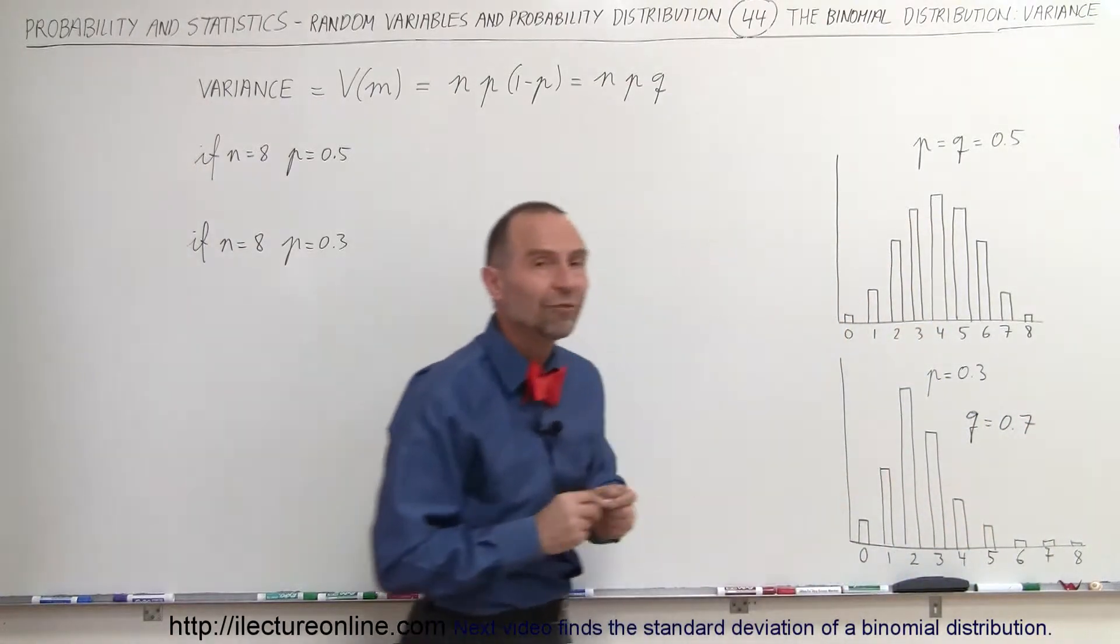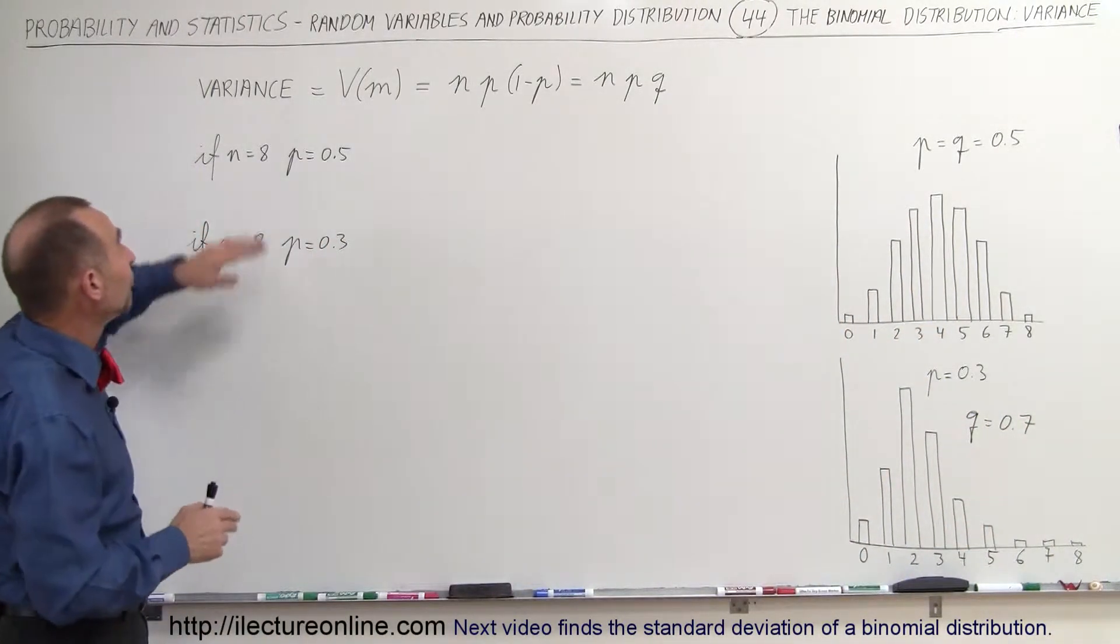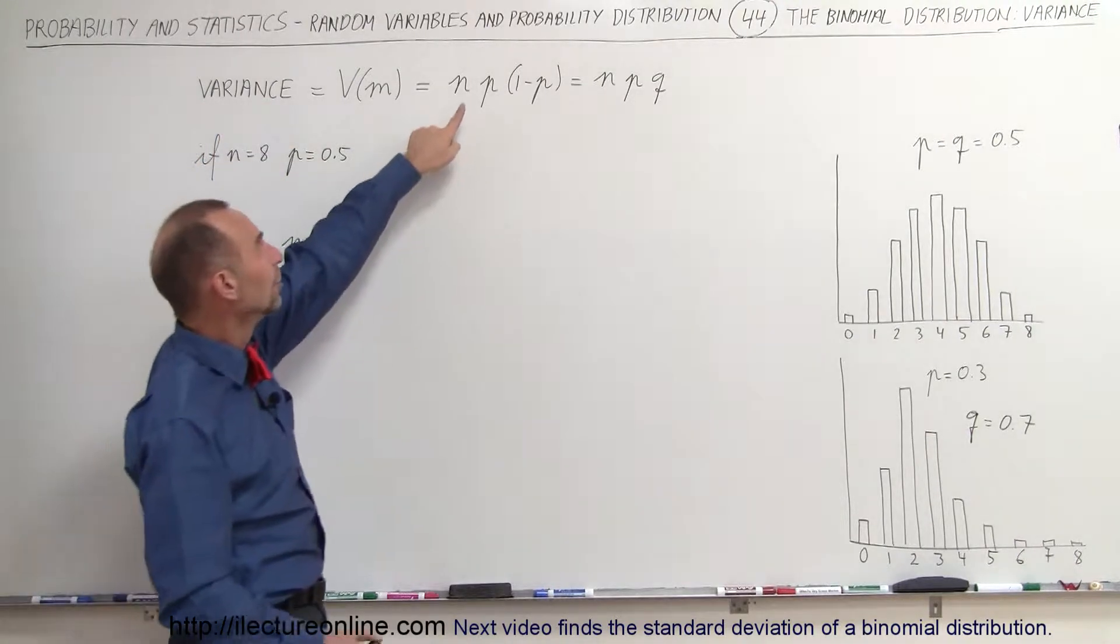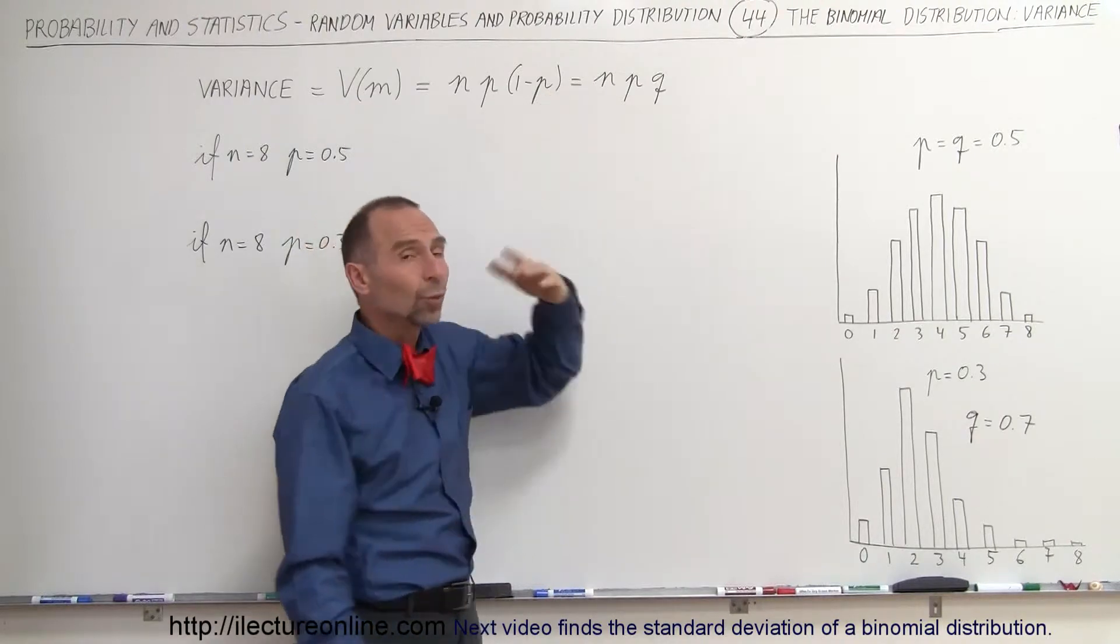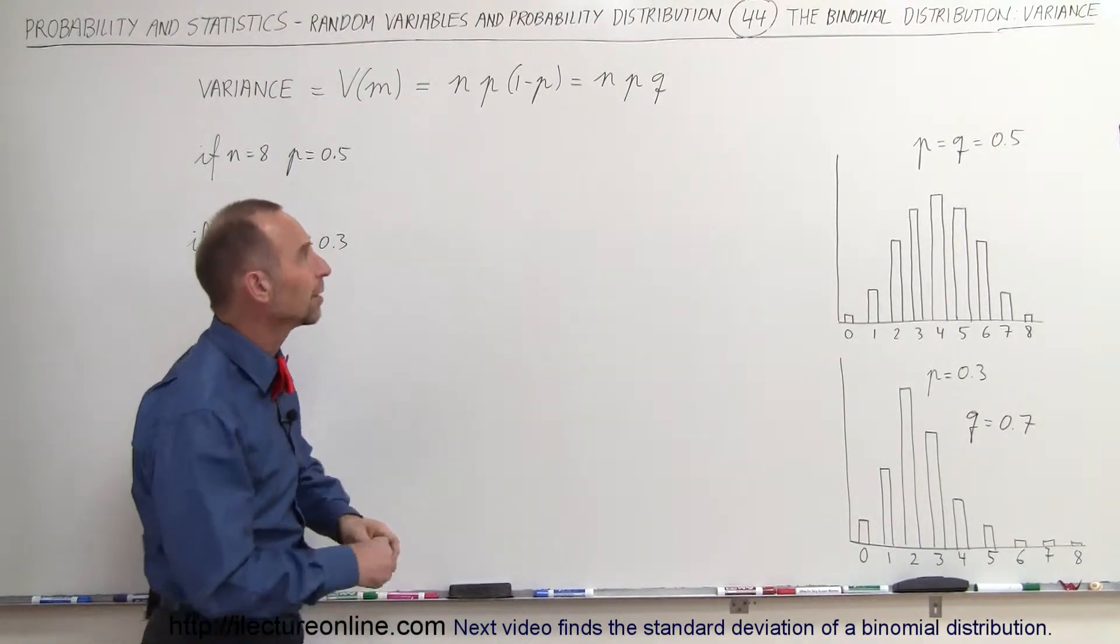So how do we calculate the variance on a binomial distribution? Well, it's actually very straightforward. It's simply the number of trials times the probability of success times the probability of failure, because 1 minus P, of course, is the probability of failure.